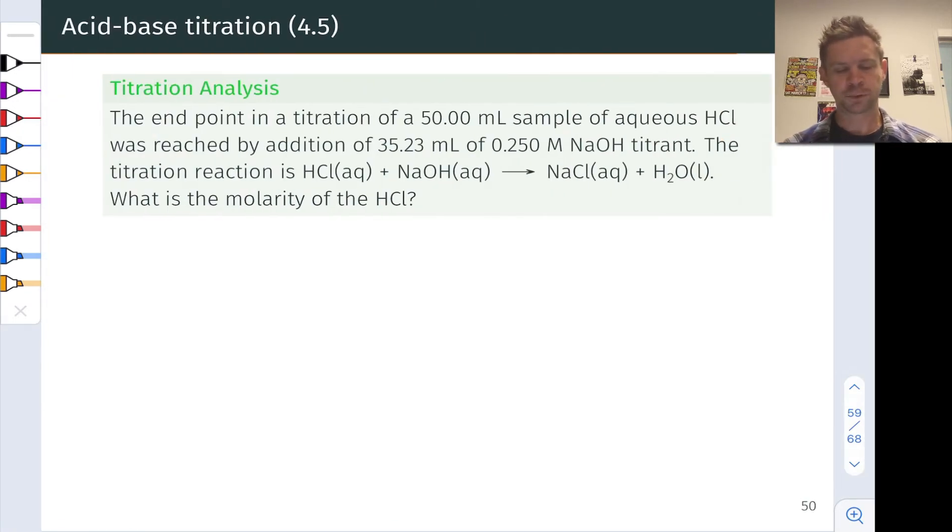In this practice problem, we're asked to apply the stoichiometric approach to determine the concentration of HCl in an analyte solution where the HCl analyte is titrated with a solution of sodium hydroxide. We've got a 50 mL sample of aqueous HCl, that's a strong acid, and we've got a volume of 35.23 milliliters of NaOH titrant of known concentration, 0.250 moles per liter.